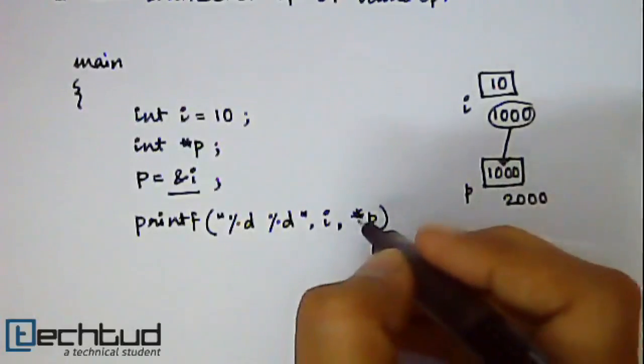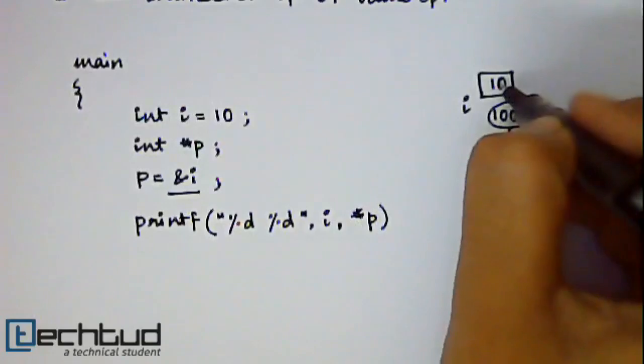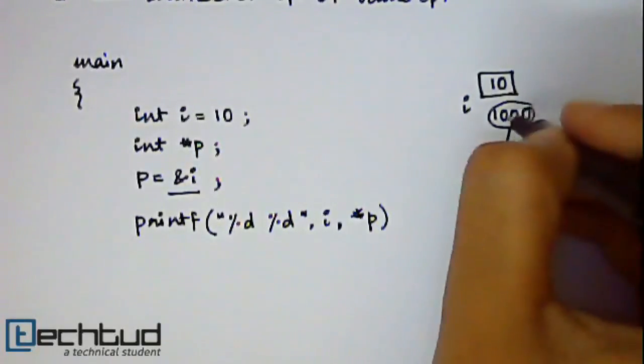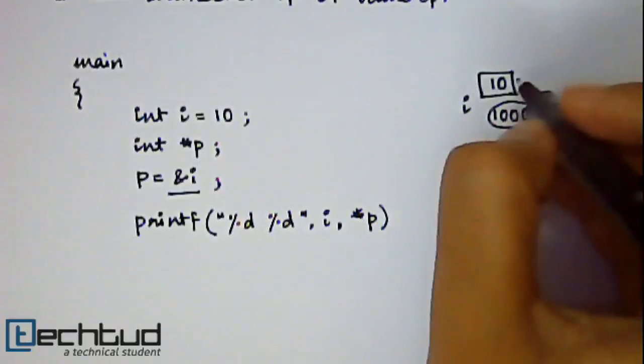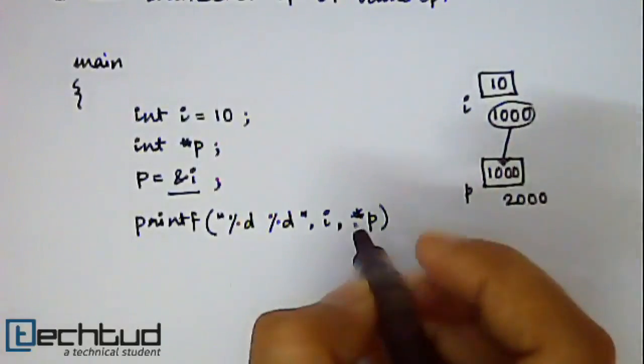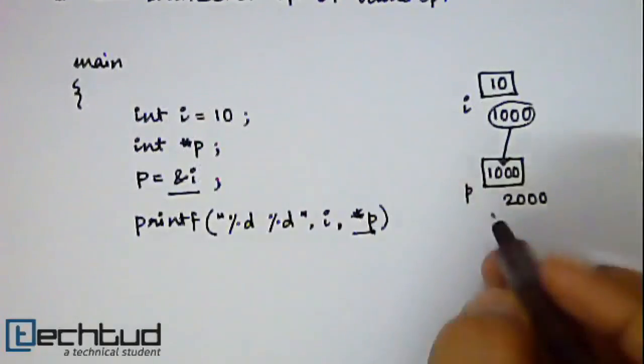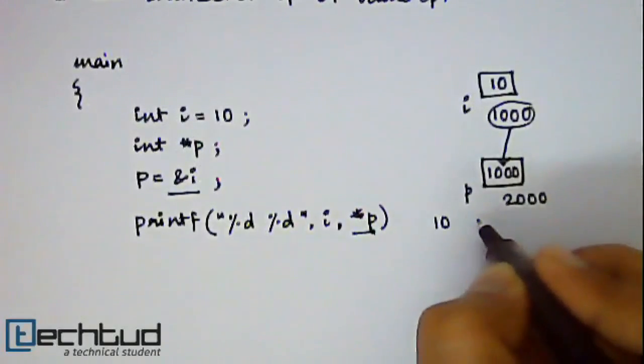It will give you the value of the particular memory location whose value is stored inside p. So value of 1000. So value of 1000 is 10. So this thing will also return you 10. So this print statement will give you output 10 10.